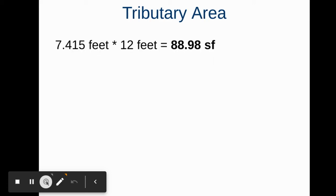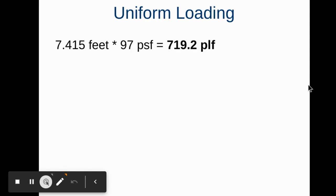To find the tributary area, once you have the tributary width, multiply that times the beam span, giving 88.98 square feet. To find the uniform loading, we use the tributary width in feet times the total floor loading of 97 pounds per square foot.